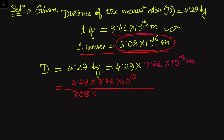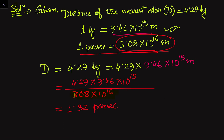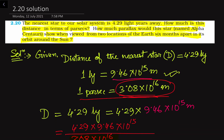Evaluating this expression, we get a value of 1.32 parsecs. We write parsecs here because we have divided by the parsec-to-meter conversion value — this is the conversion from meters to parsecs. So in the first part of this problem we have expressed the distance in terms of parsec units, and the answer is 1.32 parsecs.